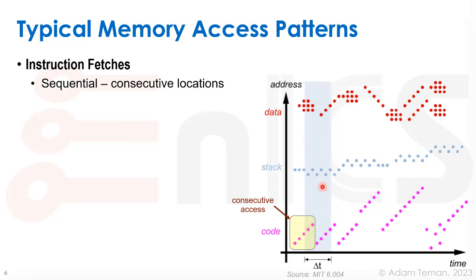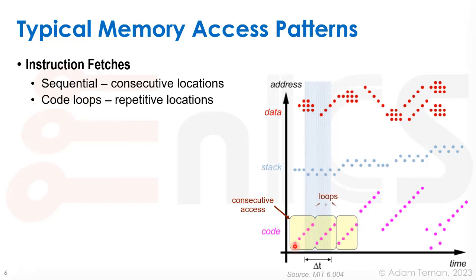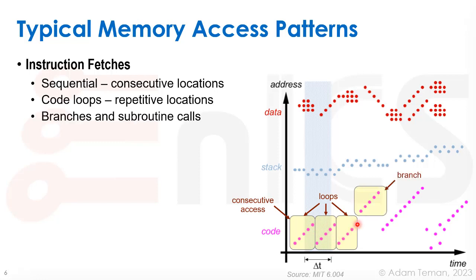The first thing our computer does is fetch instructions, which is usually one after another. As you can see in this graph from MIT — with time on one axis and address on the other — we usually address consecutive addresses to fetch instruction after instruction. That's a common pattern. Then we have loops, which are like go-to's in assembly code: after a sequential instruction, we jump back and repeat. We may also jump to different address spaces, such as a branch or subroutine call.